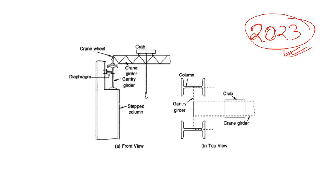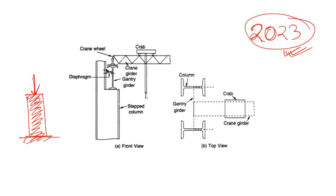If you are a beginner, you might wonder what a stepped column is. Normally, a column is a member where you apply some force and it has a uniform cross section throughout its length. But when the structure becomes a little more complex, you may have to use a variable cross section along the length.